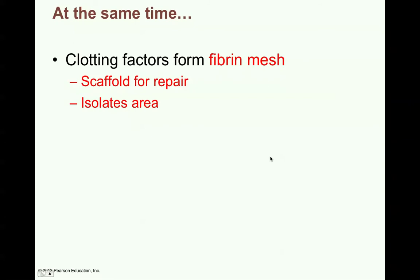At the same time, clotting factors are going to form a fibrin mesh. If there's a wound — an actual opening in the skin — you'll also have bleeding, and the body will need to stop the bleeding and heal the repair. It starts with clotting factors and platelets. The body sets up to protect itself from infection, but at the same time it needs to stop the bleeding if there is a major injury.